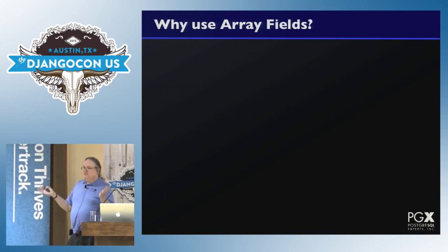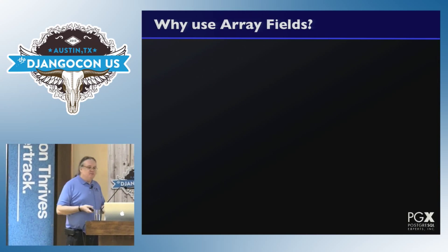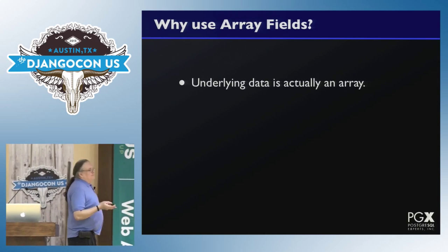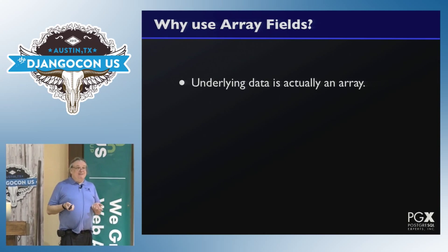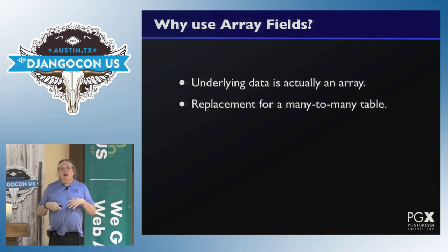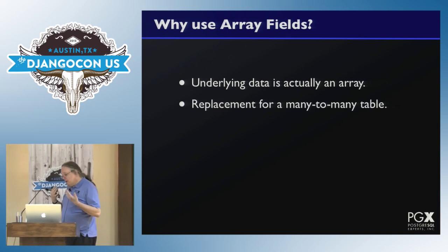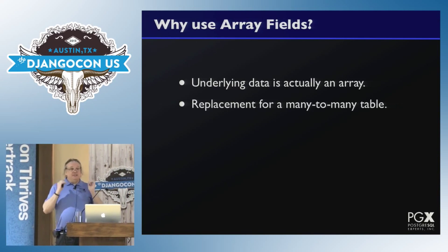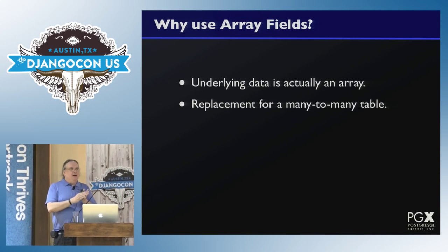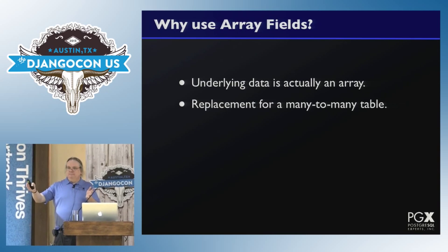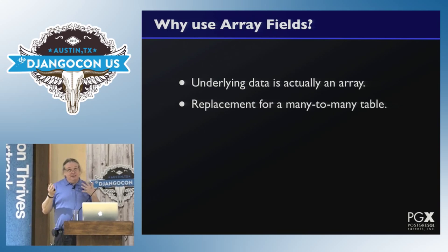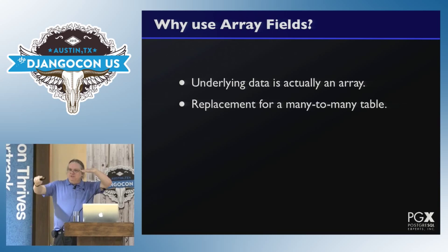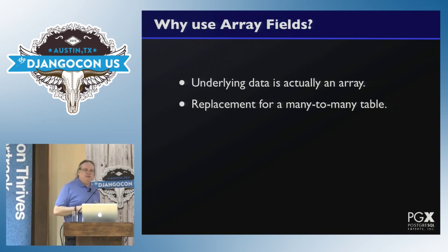Now, why would you ever want to use an array field? Well, the first reason is the underlying data really is an array. A very common situation is you're recording raw sensor input — the sensor says, at this timestamp I recorded 23 samples, here they are. You want to just dump this into a field. You could normalize it and create two tables, one for the base sensor and one for each sample, but that's a lot of overhead. So just stuff it in an array field. One of the best uses for an array is as a replacement for a many-to-many table.